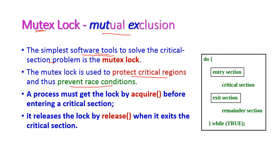In mutex locks there are two functions. The first one is the acquire function and the second one is the release function. The purpose of the acquire function is to get the lock before entering the critical section. The process must get the lock before entering the critical section — this is the entry section, hence the acquire function is placed here.